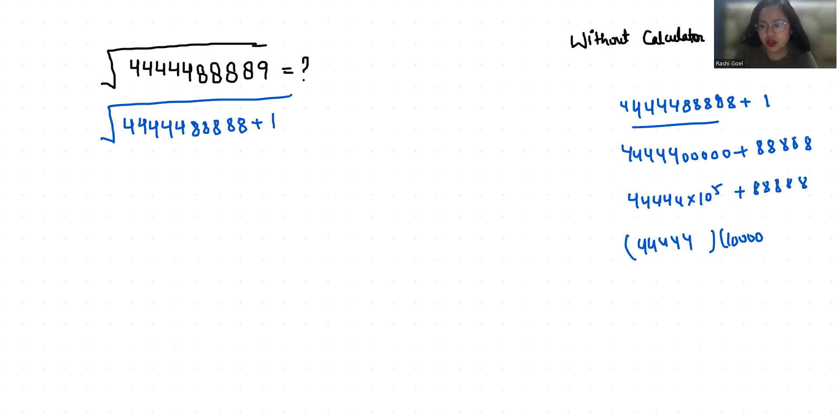Now this I can write as 4 times 11111 times 99999 plus 1, plus 8 times 11111.